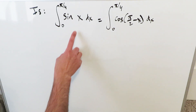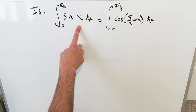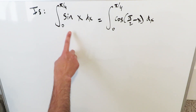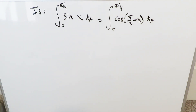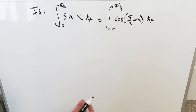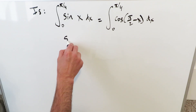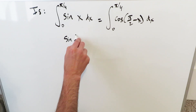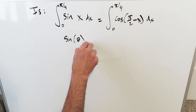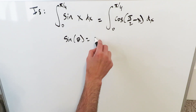The integral of sine(x) dx from zero to π/4 — is it equal to the integral of cosine(π/2 − x) dx from zero to π/4? What are we hinting to here? Co-function identities.